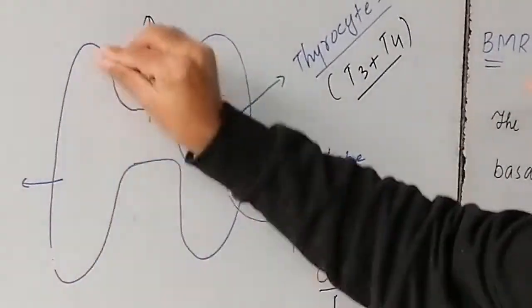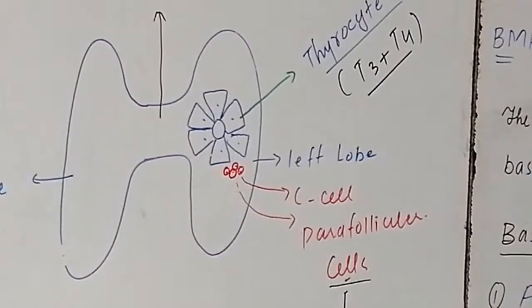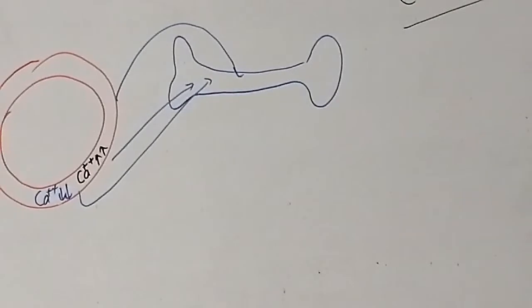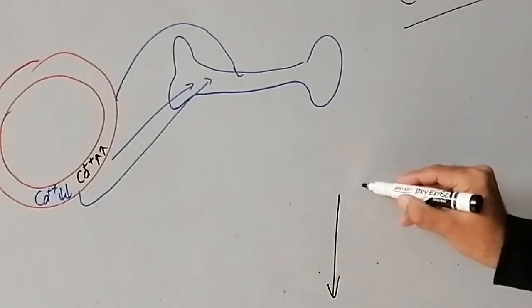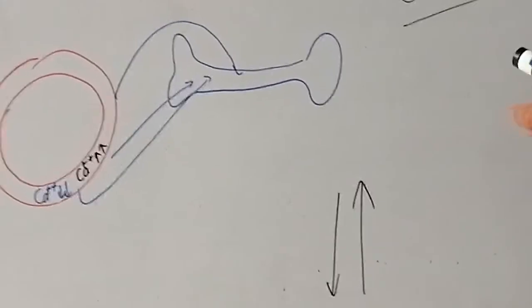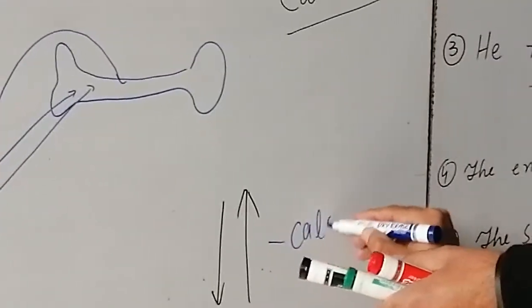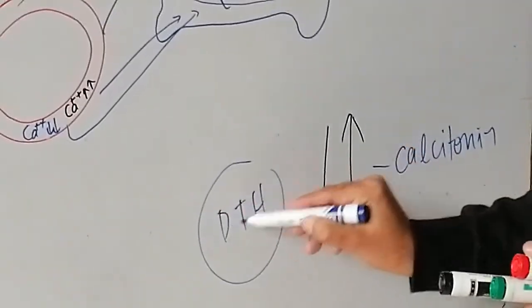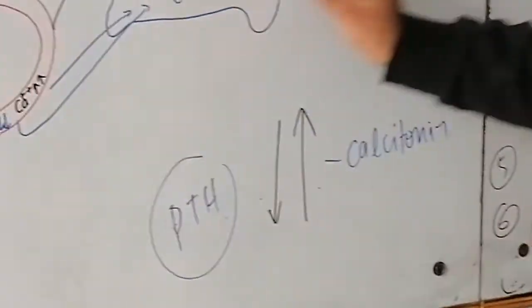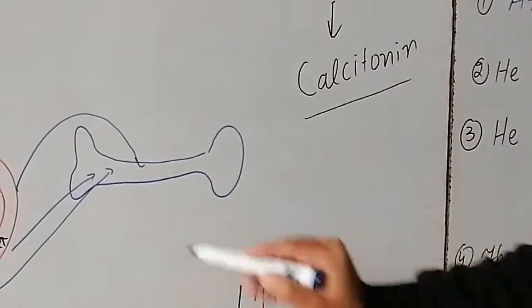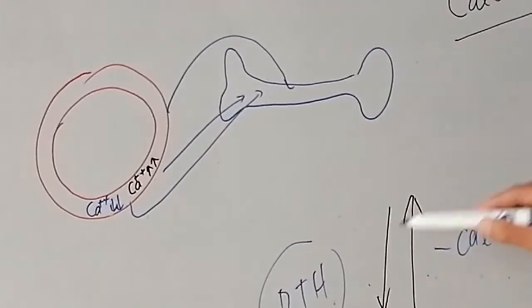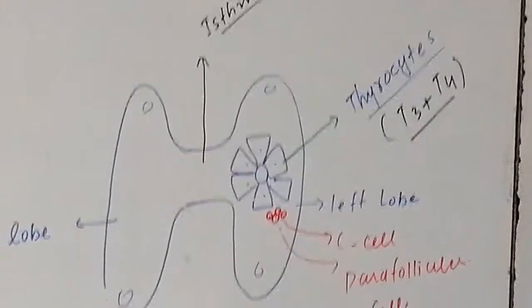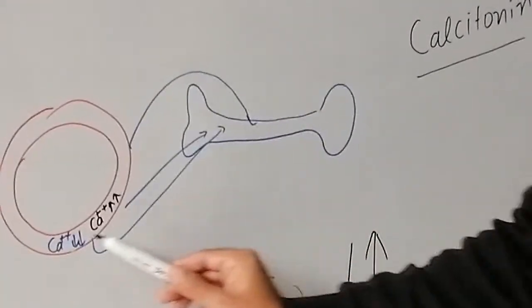If blood calcium decreases, PTH is stimulated. PTH is from the parathyroid gland, and PTH causes bone resorption, releasing calcium from bone. So the two hormones PTH and calcitonin are opposite in function. Calcitonin lowers blood calcium while PTH increases blood calcium.